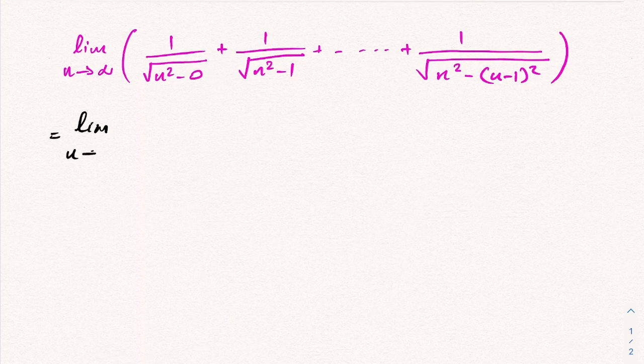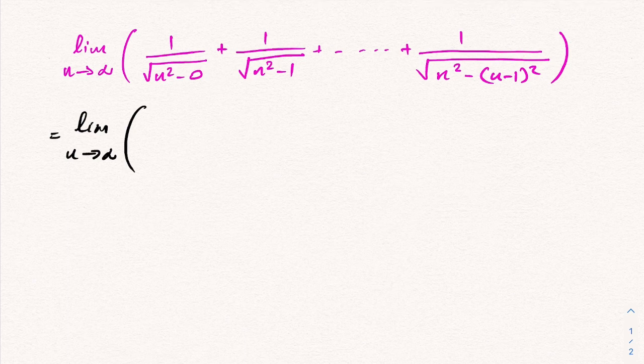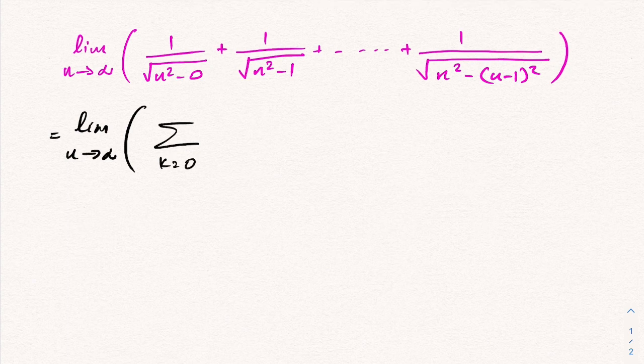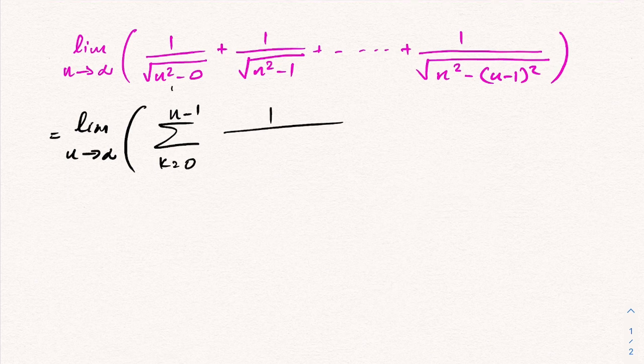n approaches infinity. Now this expression we can rewrite using sigma notation, so we can write sum of k equals 0 to n minus 1, 1 over square root of n² minus k².